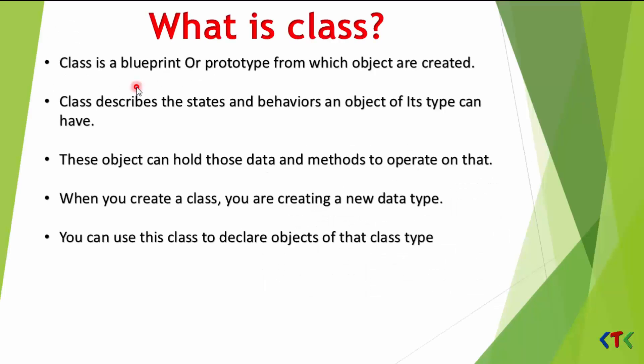So class is nothing but a blueprint, or we can say a prototype, from which objects are created. Class also describes the states and the behaviors an object of its type can have. Here, states means nothing but fields or variables, and behaviors are nothing but methods.